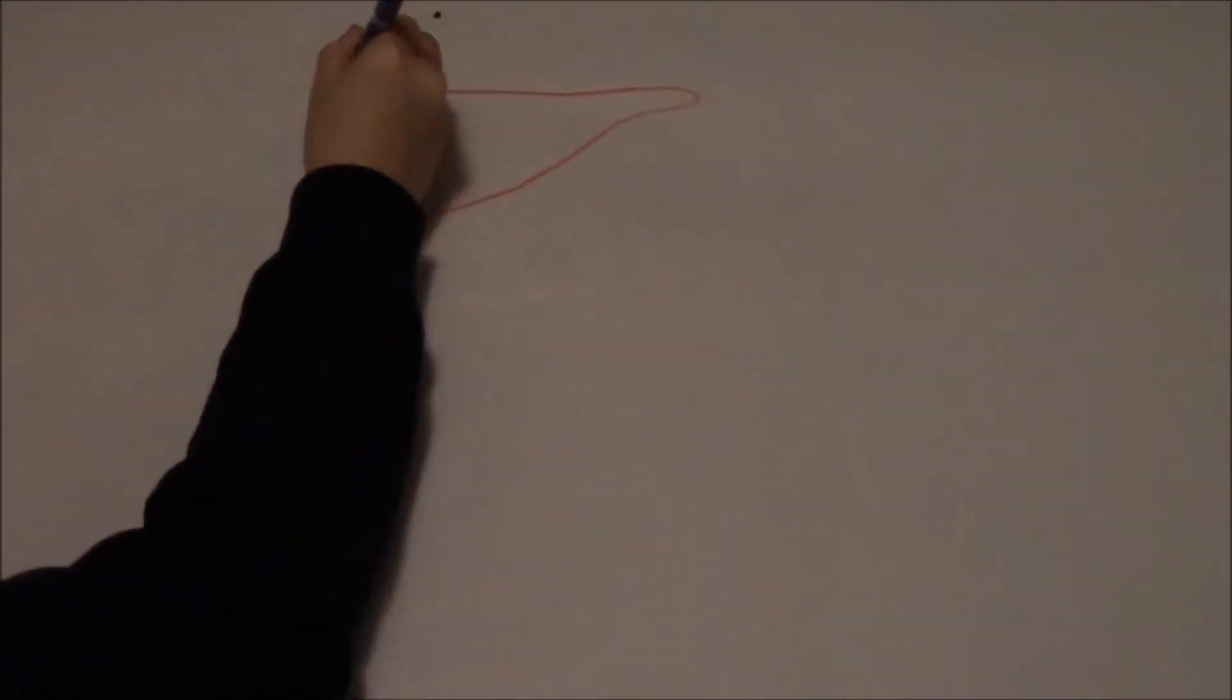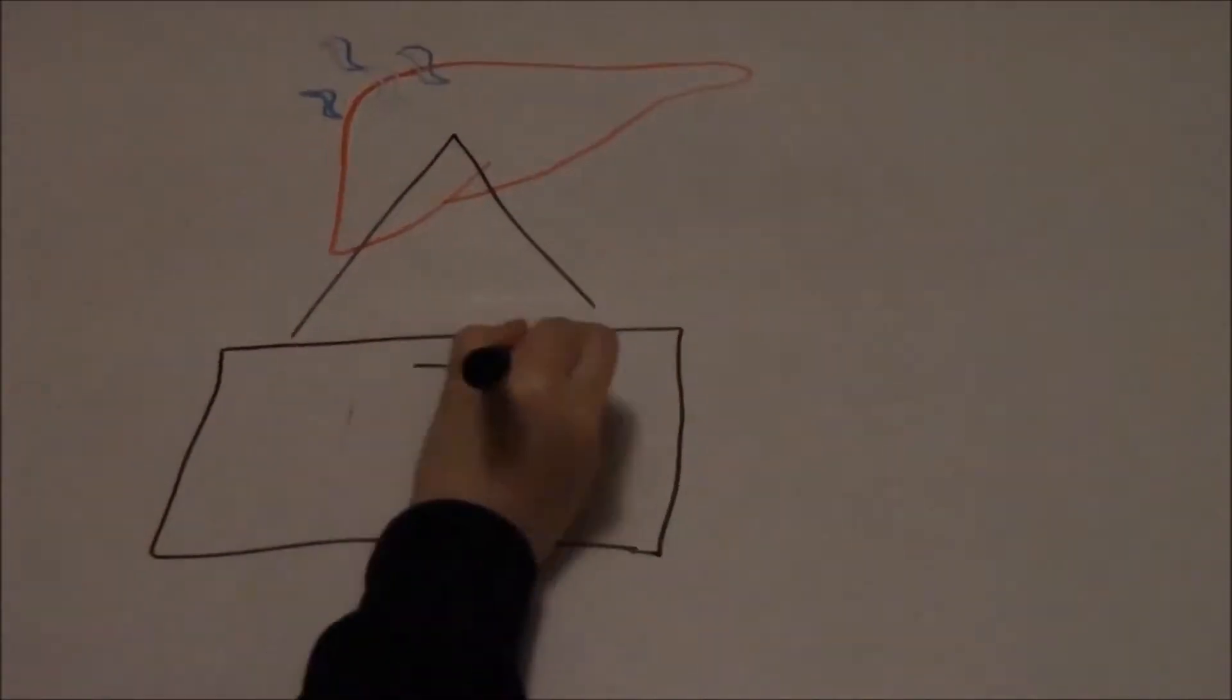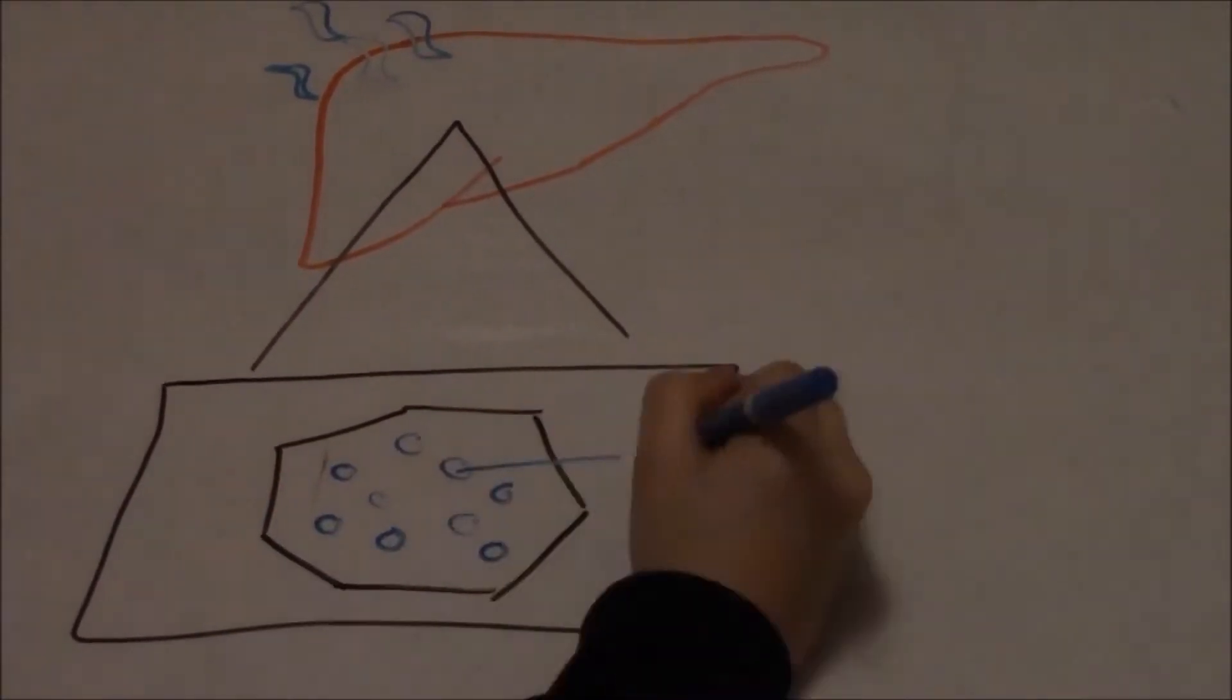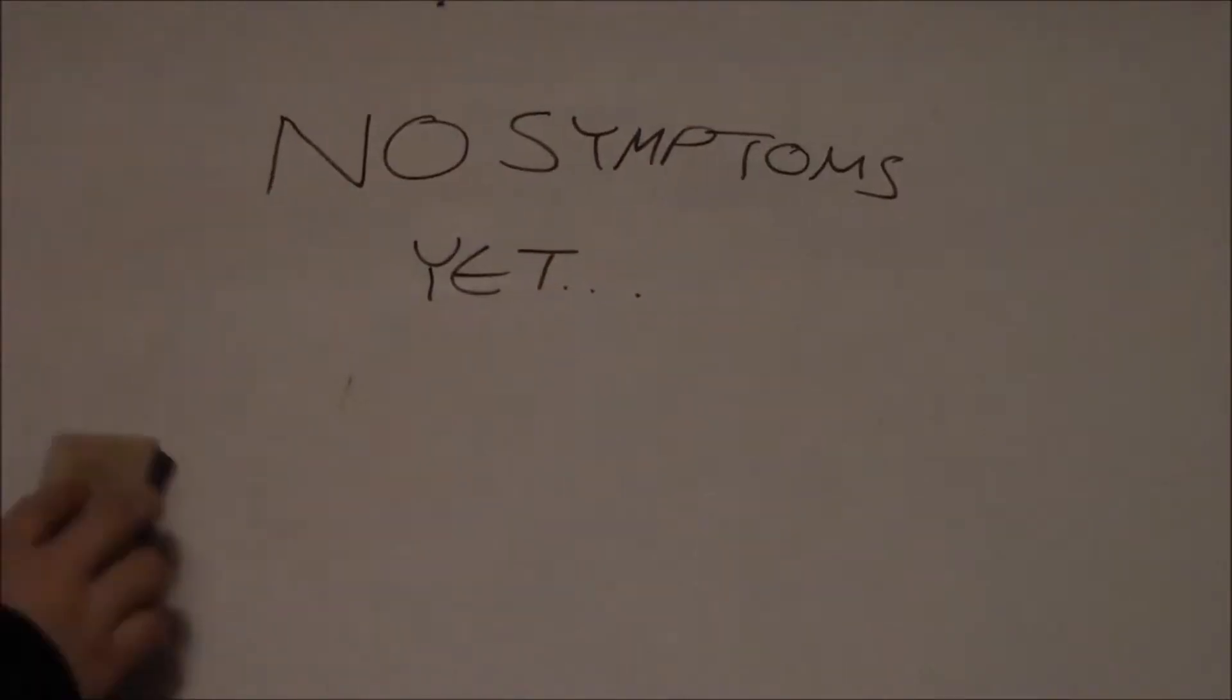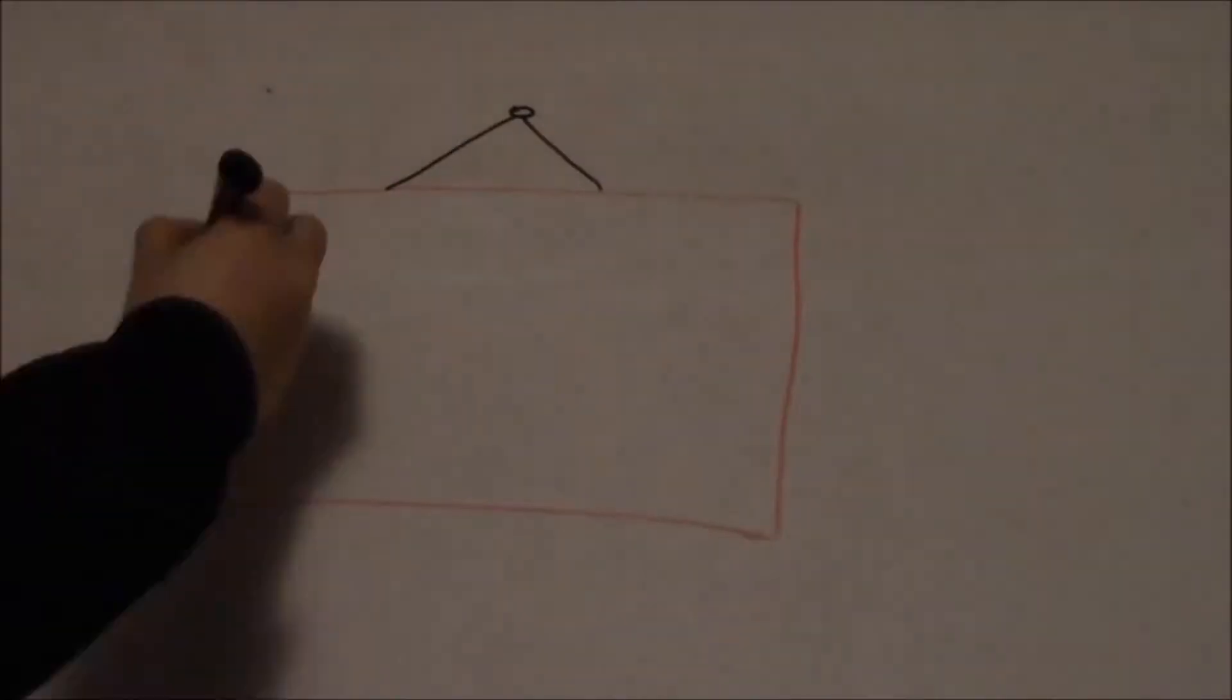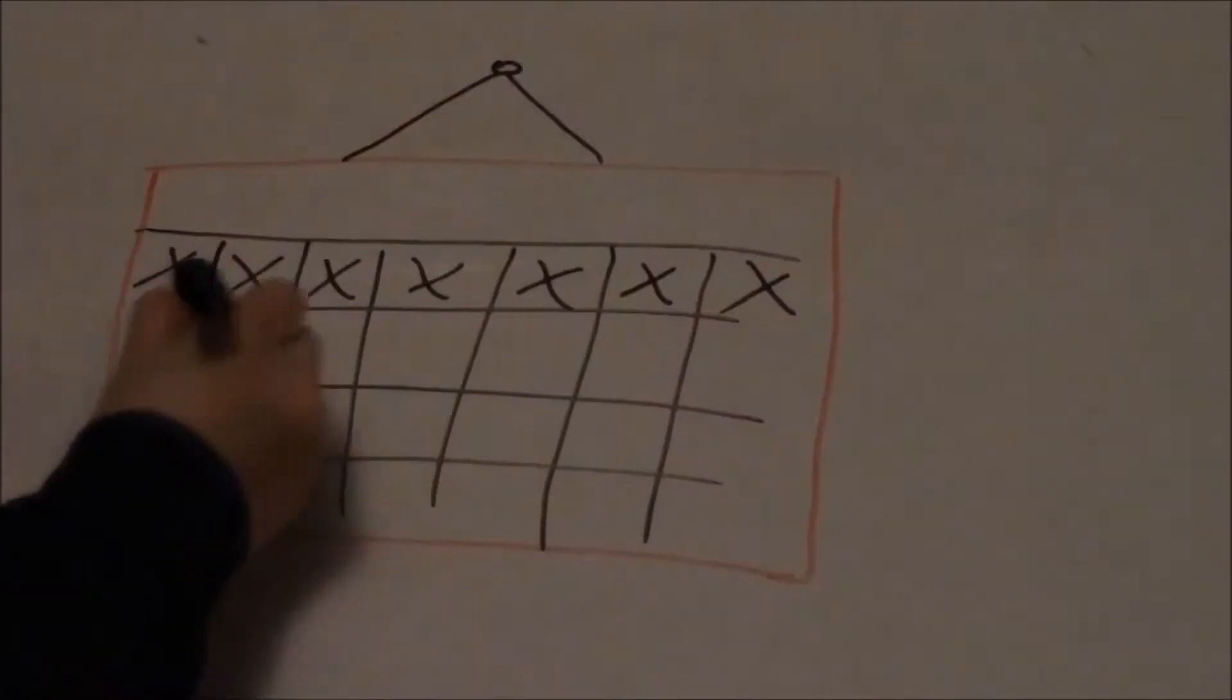When the sporozoites enter the bloodstream, they travel to the liver, where they infect the liver cells and asexually reproduce, producing thousands of merozoites. At this point, no clinical symptoms are triggered yet. Symptoms only show approximately 10 to 15 days after the host has been bitten.